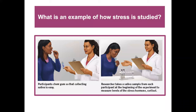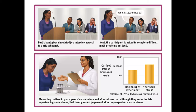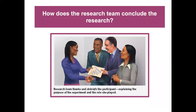How is stress studied? In one example, participants chew gum so that collecting saliva is easy. Researchers take a saliva sample at the beginning to measure levels of the stress hormone cortisol. Participants are then given a simulated job interview speech to a critical panel, and asked to complete difficult math problems out loud. Measuring cortisol before and after shows that although participants enter the lab experiencing some stress, that level goes up 40% after they experience social stress. The research team then thanks and debriefs the participant.